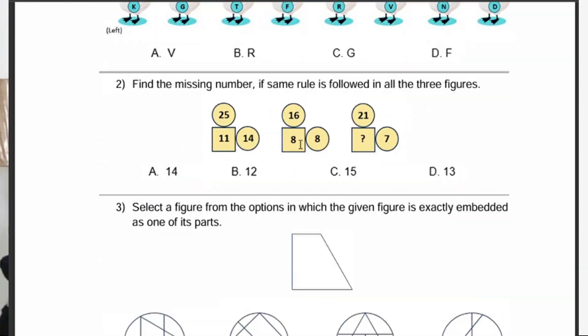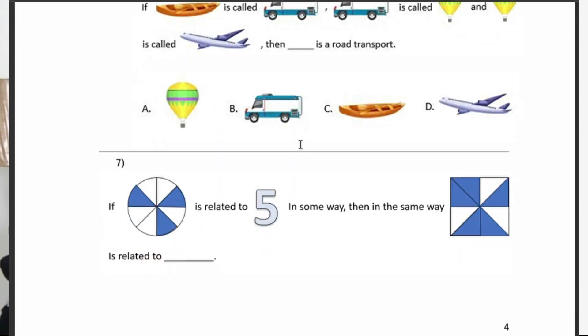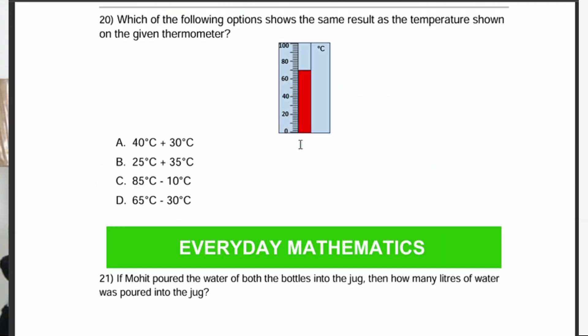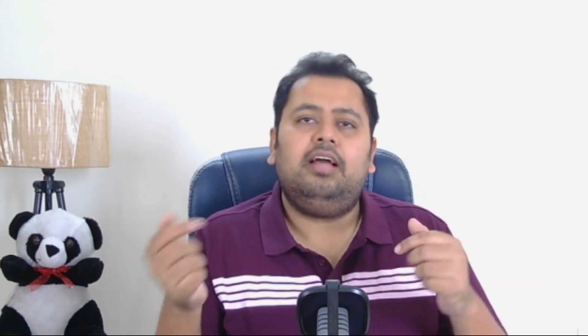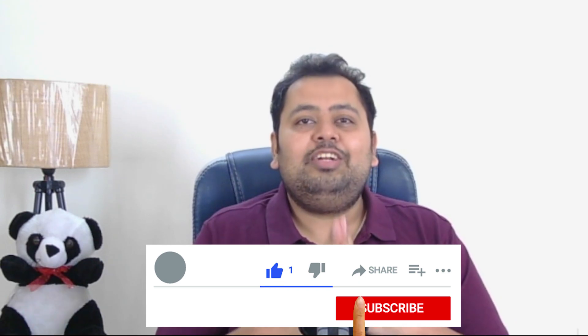I know I'm actually talking to more parents here rather than kids, so I'd like to mention this book I have. This book contains 18 previous year question papers with answer keys for the International Mathematics Olympiad. You can purchase it by scanning the QR code, checking the description box or pinned comments, at just rupees 89.